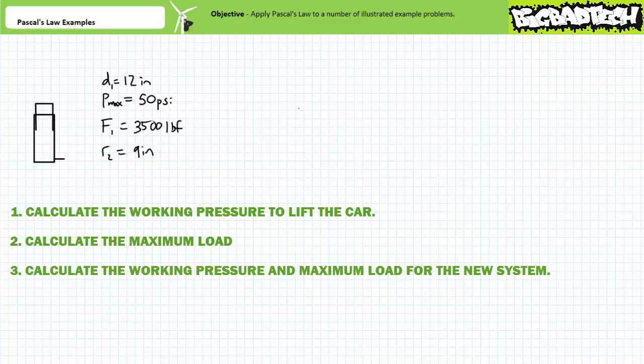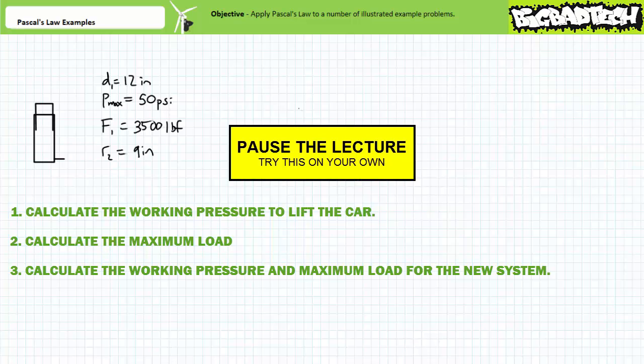Why or why not is your boss insane? Prove it by calculating the pressure necessary to lift the same 3,500 pound car and the maximum load the new system can lift given maximum pressure is again limited to 50 psi. By all means, pause the lecture and take your best shot.